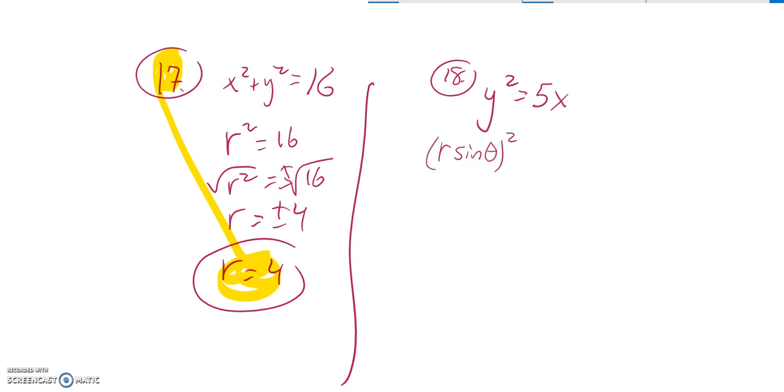And y is squared, and that's equal to 5 times x. X is r times cosine theta. So 5r cosine theta.